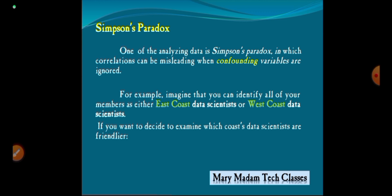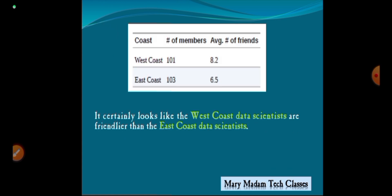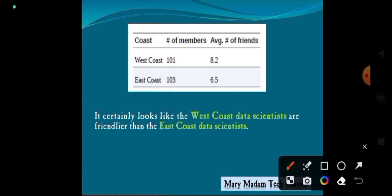If you want to decide which coast's data scientists are friendlier, consider West Coast with 101 members and East Coast with 103 members. The West Coast average friend count is 8.2, and the East Coast average friend count is 6.5.